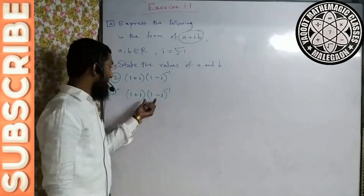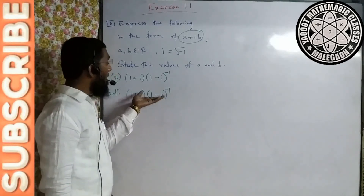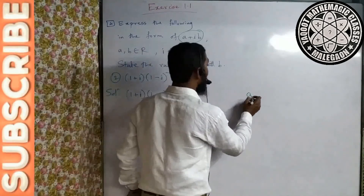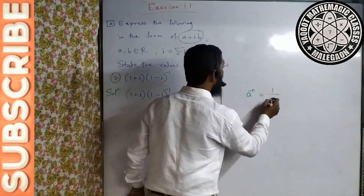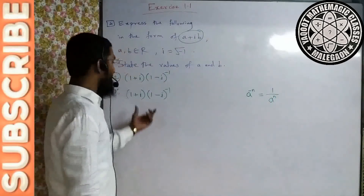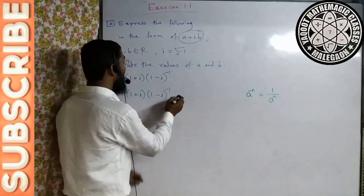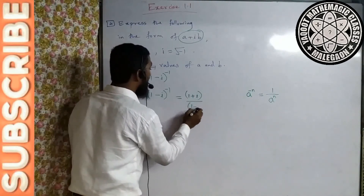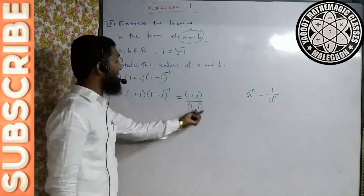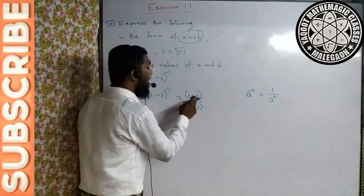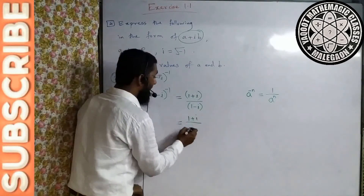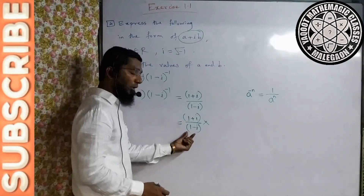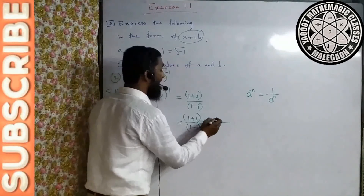Ham isse likh sakte hain: minus 1 power ko positive karne ke liye isko 1 upon (1 − i) ke form mein denominator mein le jaate hain. Kyunki a ki power minus n ho toh 1 upon a ki power plus n likh sakte hain. Toh expression ban jaata hai: (1 + i) divided by (1 − i). Ab yeh do complex numbers ka division hai.